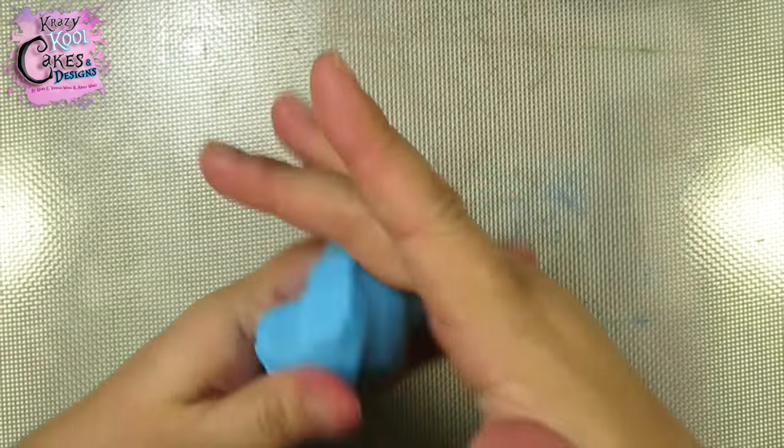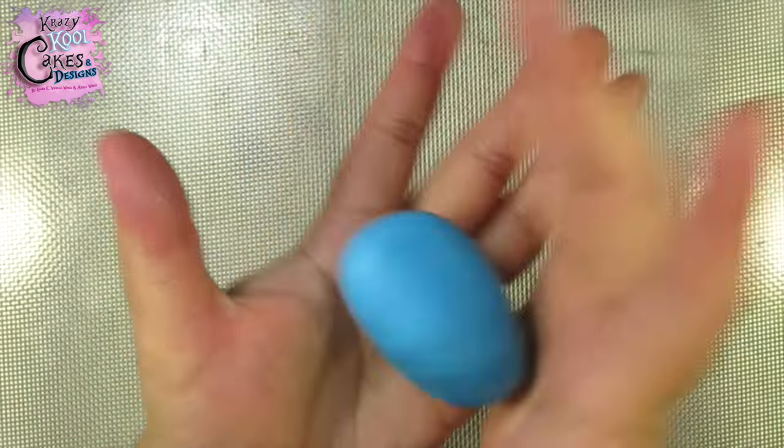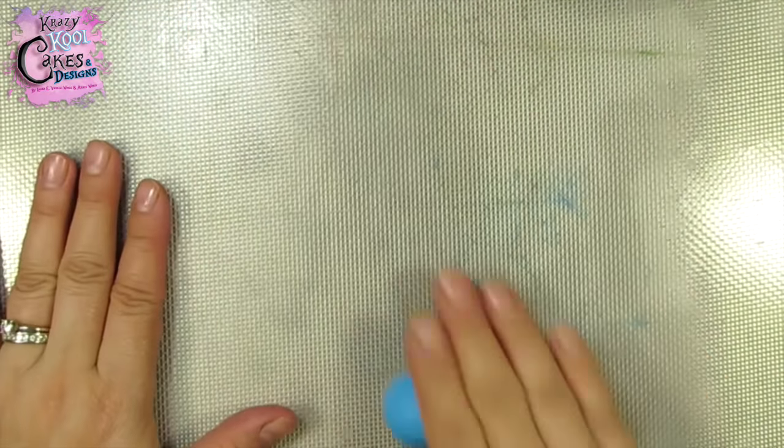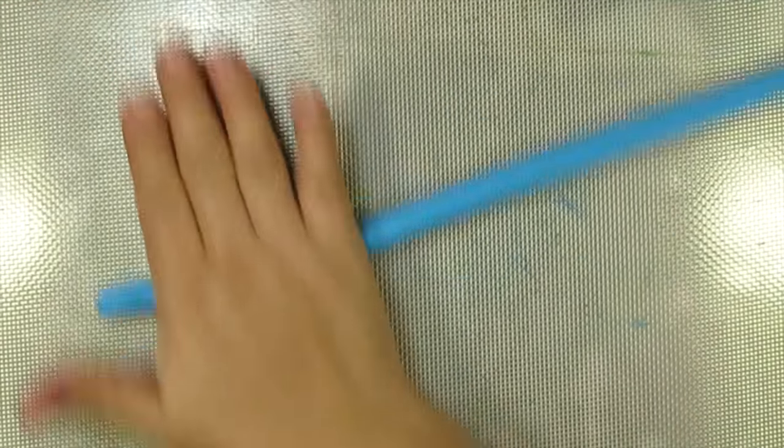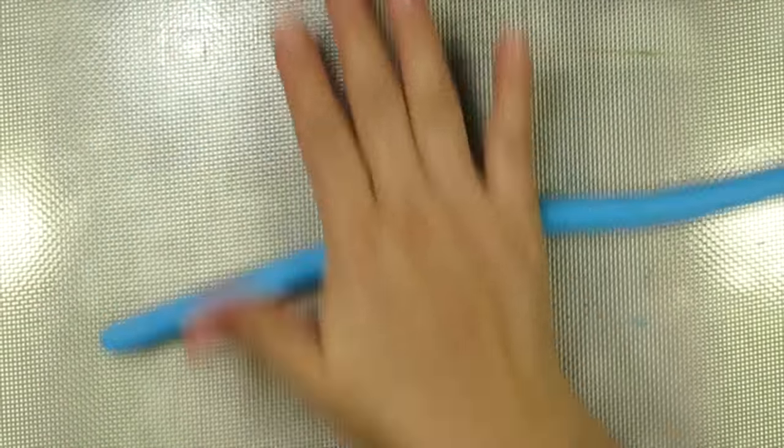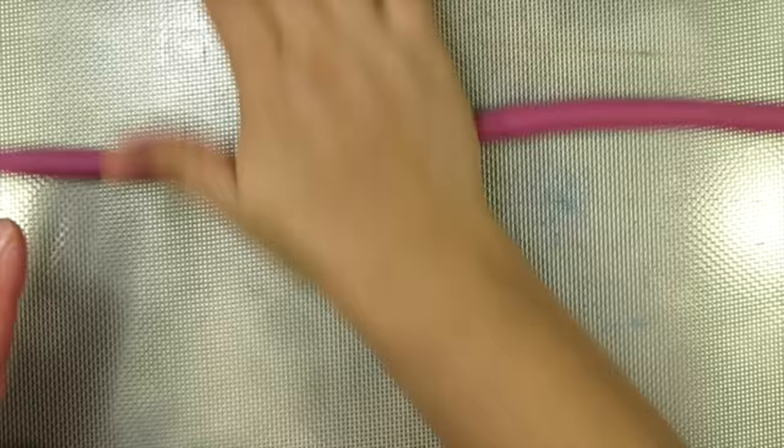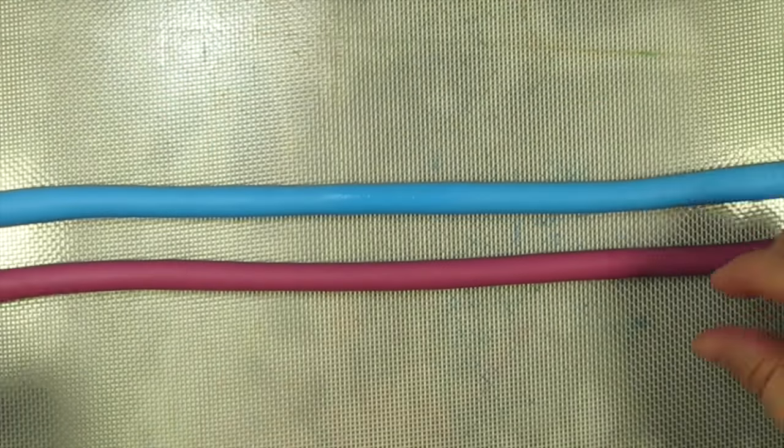The first thing we need to make for our Wishes cake are her beautiful candles. You want to make these first to give them plenty of time to dry before you actually make the cake. Here I'm rolling out some blue gum paste into a long worm about a half an inch in diameter. I'm going to do the same with this nice deep pink color. These are the two colors that make up her candles.